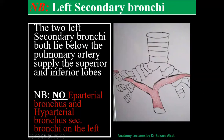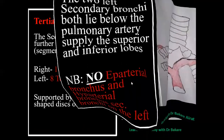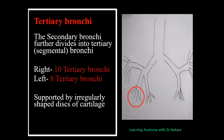On the left side, there is no such eparterial/hyparterial differentiation because the left pulmonary artery runs over the entire secondary bronchial division network. The tertiary bronchial division, the third stage, is called segmental bronchi as it supplies segments — subdivisions of the lobes. On the right side there are 10 tertiary divisions; on the left side there are eight. Their structural configuration shows irregularly shaped discs of cartilage, similar to the secondary bronchial division.